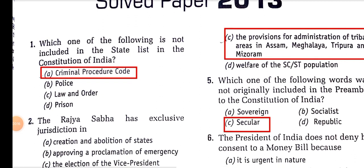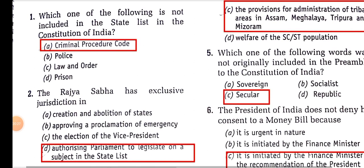Which one of the following is not included in the state list in the Constitution of India? It is Criminal Procedure Code. Police, Law and Order, and Prisons are always included in the state list.